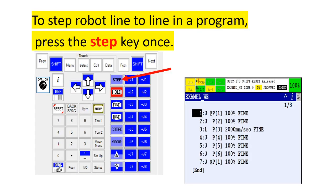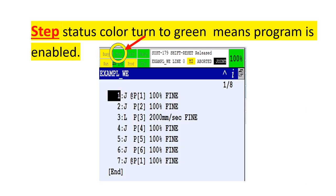To step robot line-to-line in a program, press the step key once. Step status color turned to green means program is enabled.